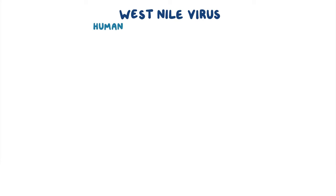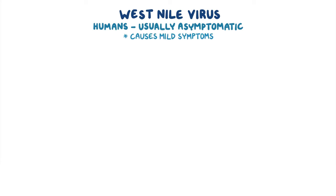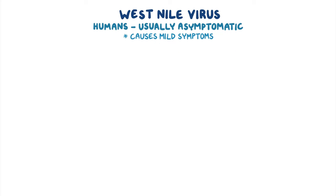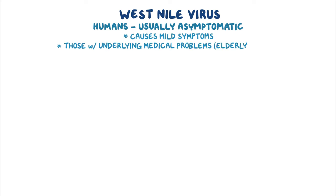When humans get infected, it's usually asymptomatic or causes mild symptoms like fever, chills, headache, and vomiting. Only a few people — usually those with underlying medical problems, the elderly, or the young — develop meningitis or encephalitis.